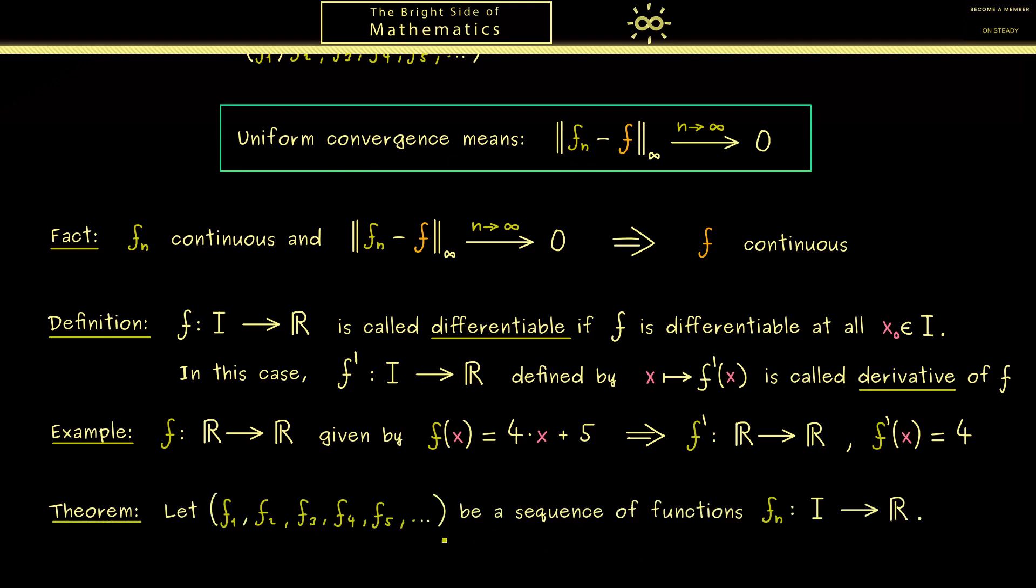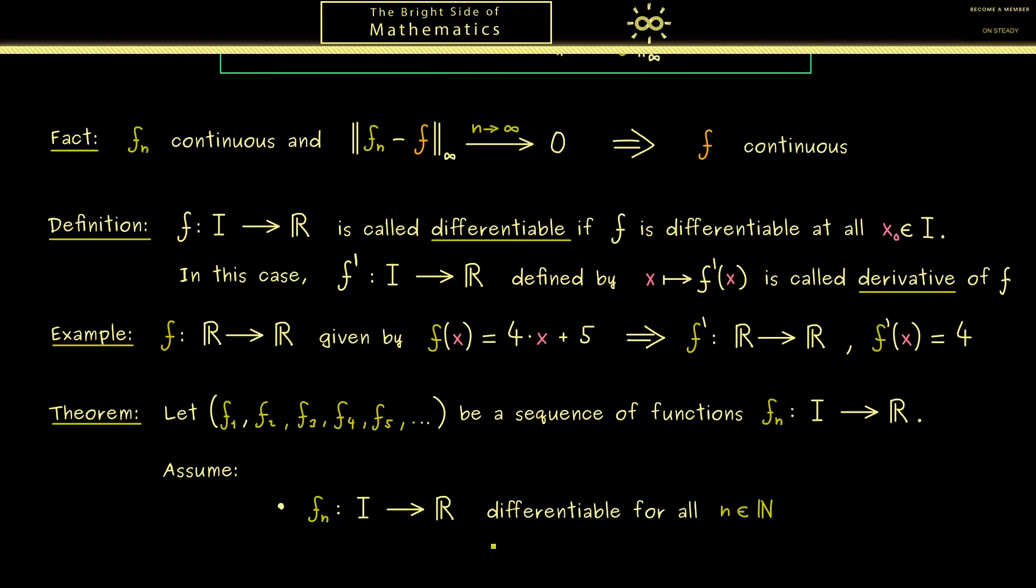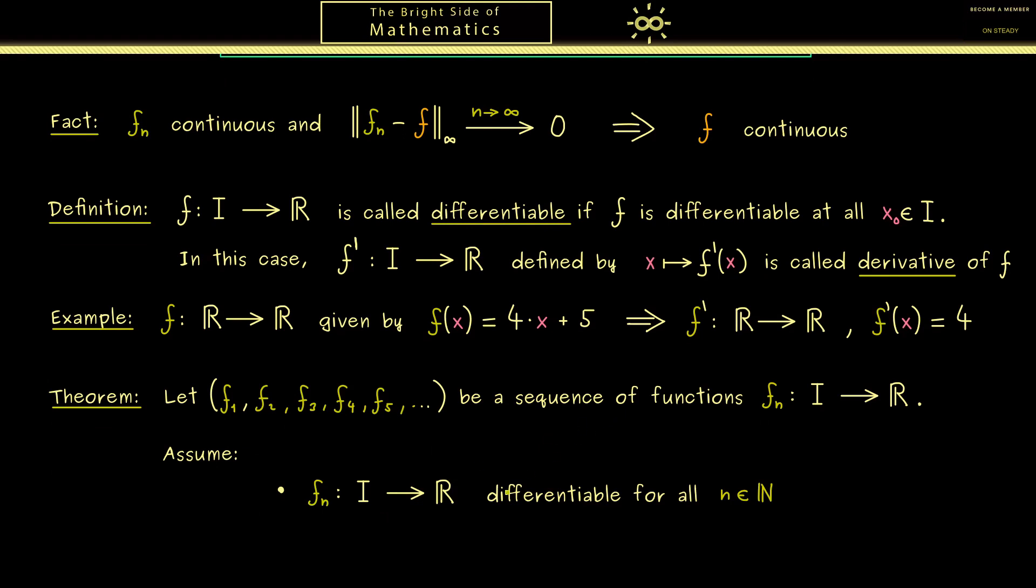First, what we put in is that we have a sequence of functions fn with domain I. Now let's collect some assumptions we want for this sequence. As promised, we want to talk about differentiable functions, so all the functions in the sequence should be differentiable. Then uniform convergence comes in when we say that the derivatives fn' are uniformly convergent to a function g.